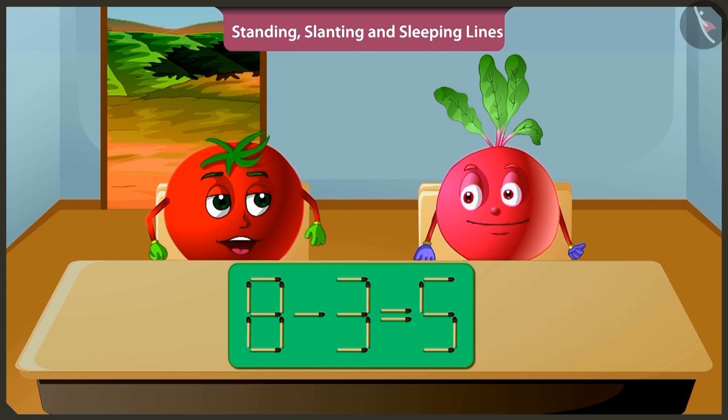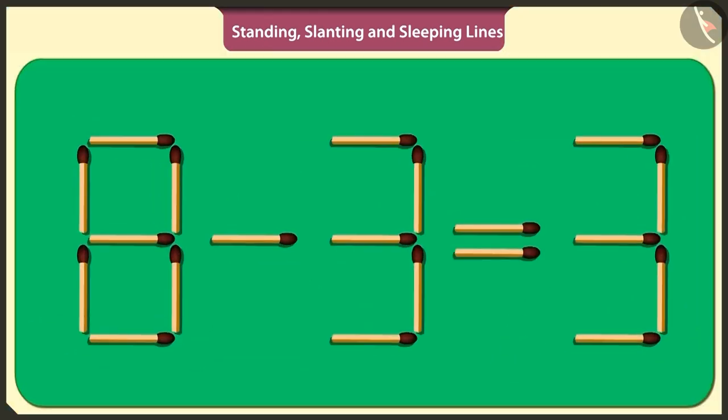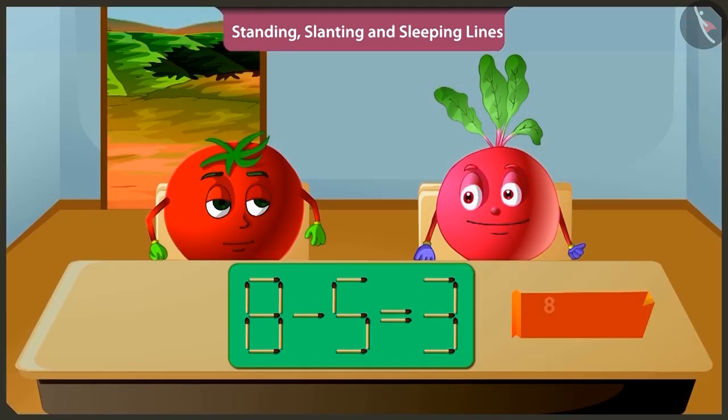Pitu, there is another way to solve this puzzle. What's that? Look. Now out of the subtracted number three in this puzzle, by removing this standing matchstick and placing it vertically here, then three is converted to five and thus the puzzle will be solved. Oh, yes. When we subtract five from eight, we get three. This is fun. Let's play another game.